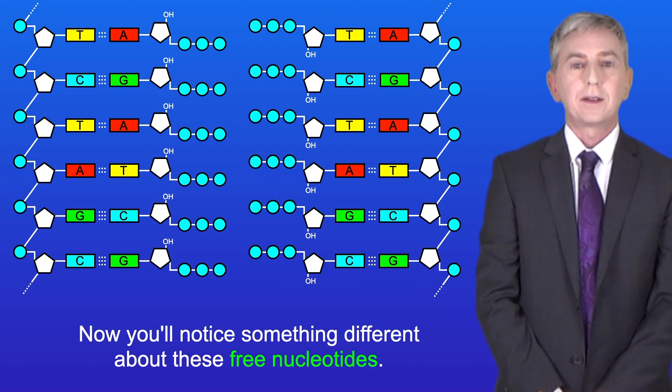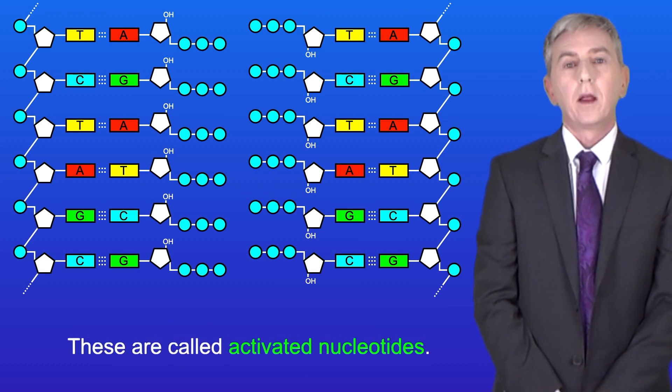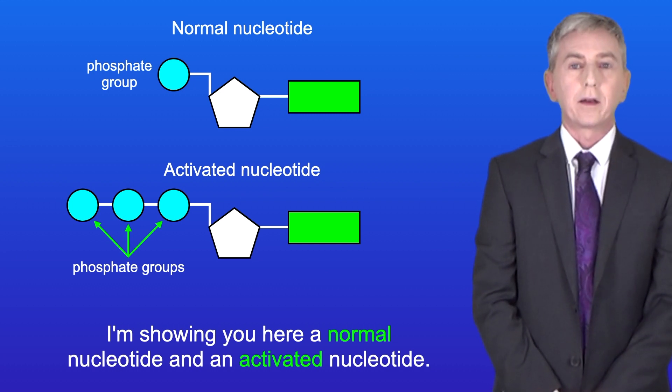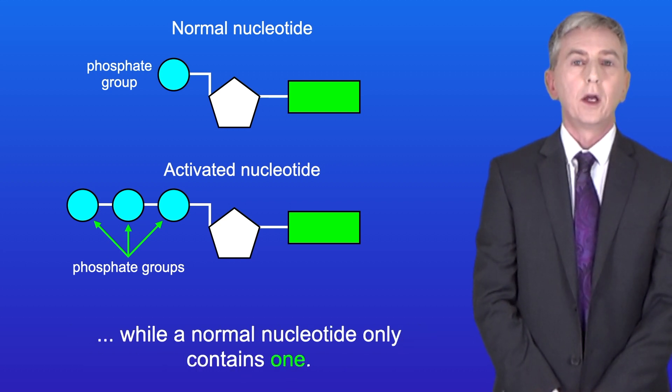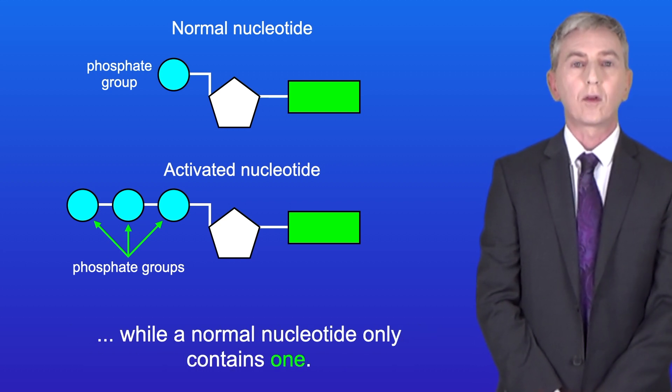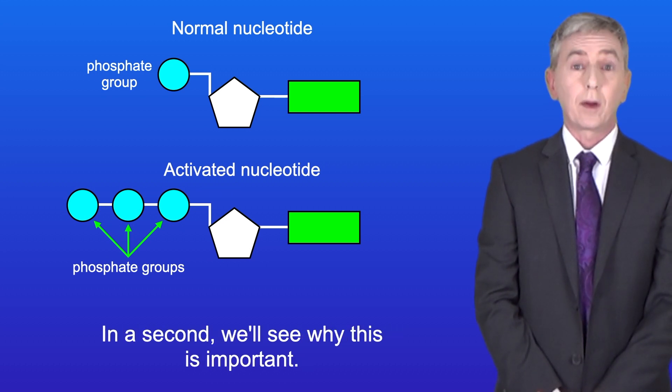Now you'll notice something different about these free nucleotides. These are called activated nucleotides. I'm showing you here a normal nucleotide and an activated nucleotide. As you can see an activated nucleotide contains three phosphate groups while a normal nucleotide only contains one. In a second we'll see why this is important.